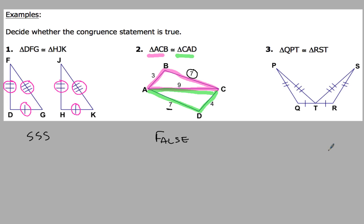In example 3, we've got triangle QPT congruent to triangle RST. Looking at this one, we've got three sides of one triangle congruent to three sides of another triangle. So again, we'd be able to use the side-side-side congruence postulate to prove those two triangles are congruent.